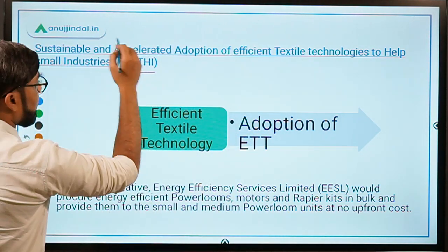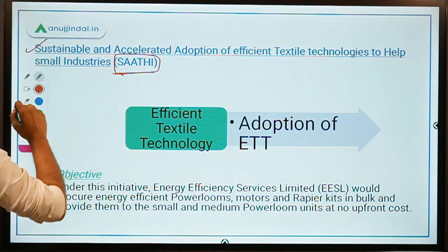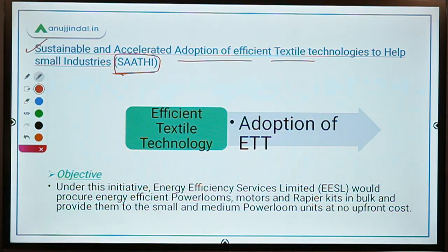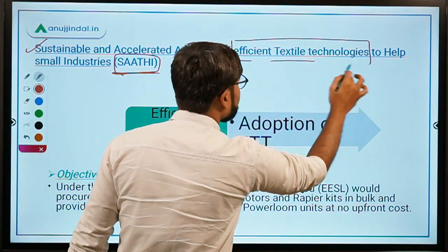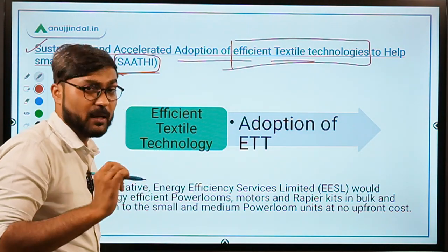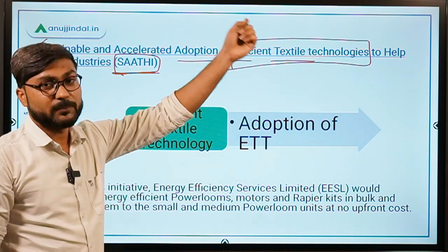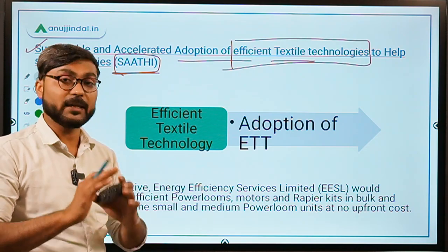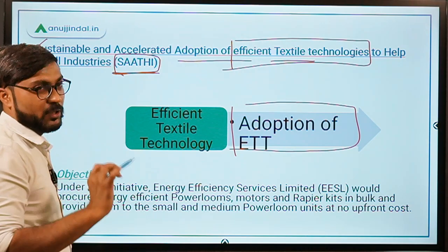Now let's talk about the second SATHI, which stands for Sustainable and Accelerated Adoption of Efficient Textile Technologies to Help Small Industries. The key words are efficient textile technologies, meaning we have to adopt efficient textile technology.